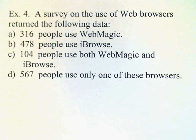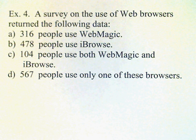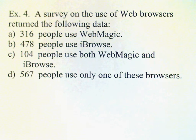Sometimes it happens when you read a newspaper or look at a report on the internet that you'll notice there's a mistake. This can often happen with data, either because there was a mistake in copying the data over or in working with the data. You can use Venn diagram analysis to determine if there is an inconsistency in the data.